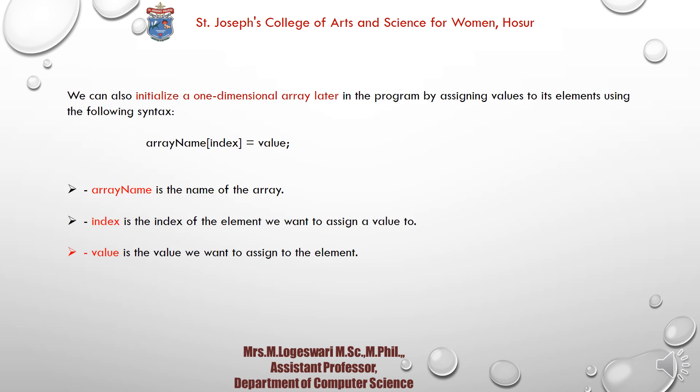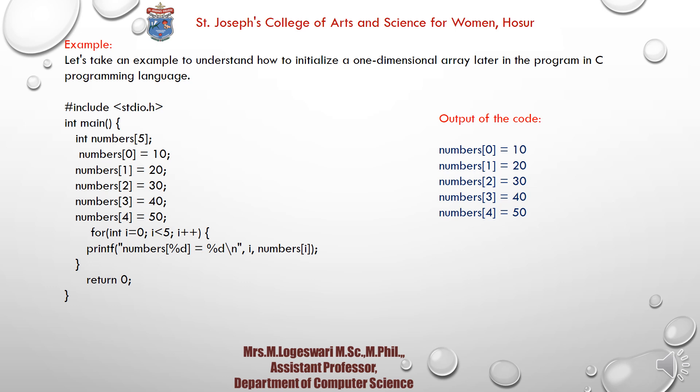You can also initialize a one-dimensional array later in the program. The syntax is: array name[index] = value. Here, the array name is the name of the array, index is the position, and value is what you assign. For example, declare 'int numbers[5]', then assign: numbers[0]=10, numbers[1]=22, numbers[2]=32, numbers[3]=42, numbers[4]=52. This is the example for initializing a one-dimensional array later.